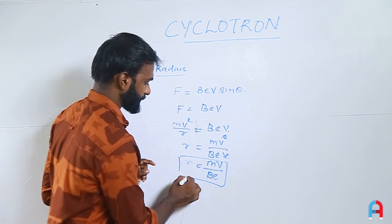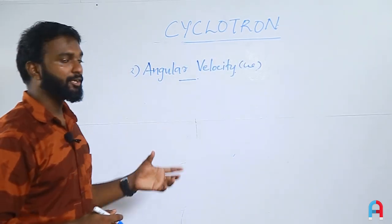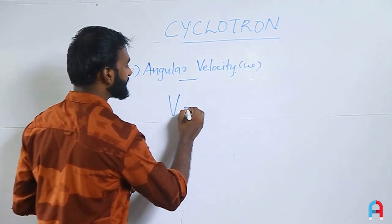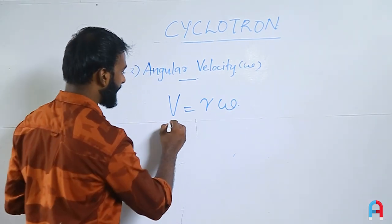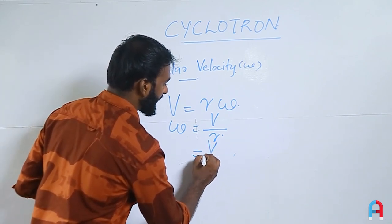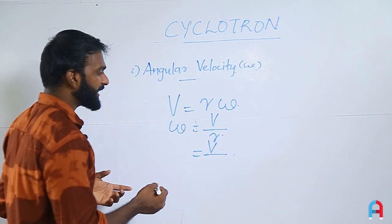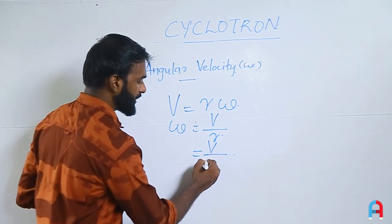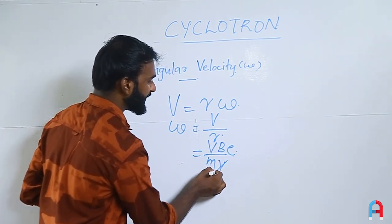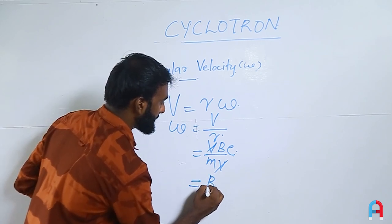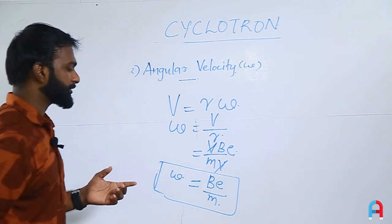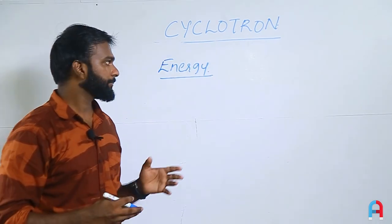From the radius equation r = mv/(BQ), we can derive the angular velocity. Using v = rω, we get ω = v/r. Substituting r = mv/(BQ), the angular velocity ω = BQ/m. This is the expression for angular velocity of the particle in the cyclotron.